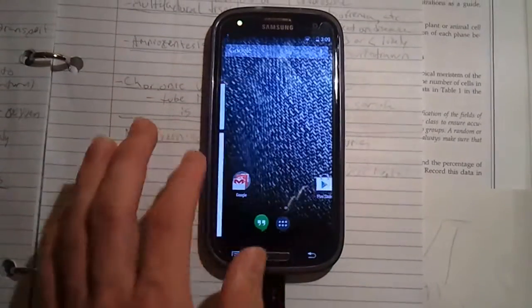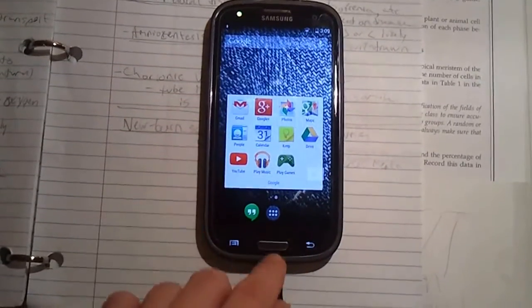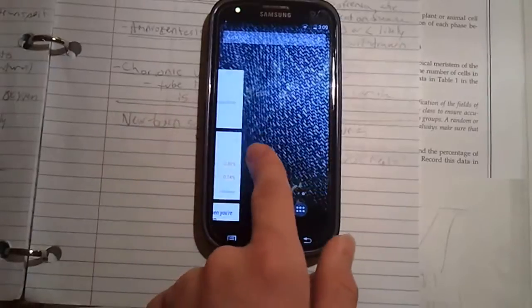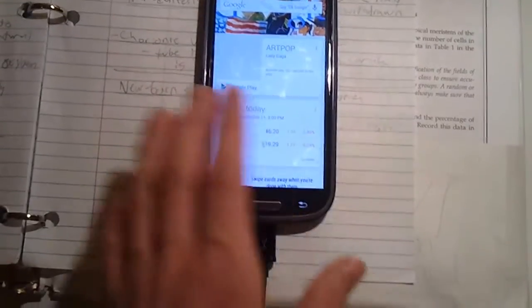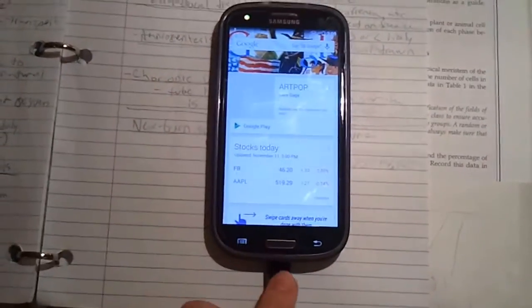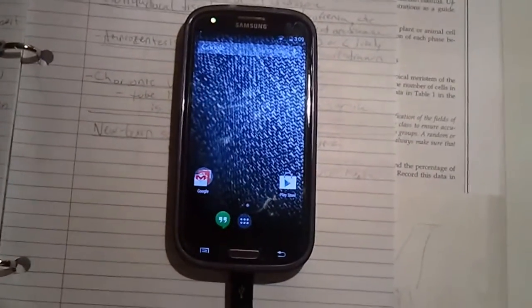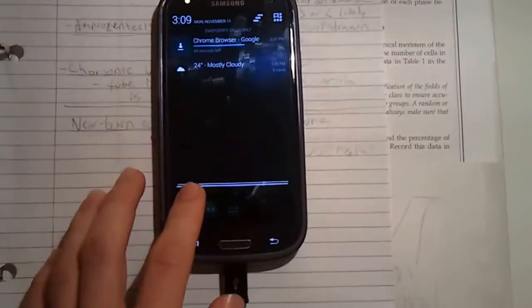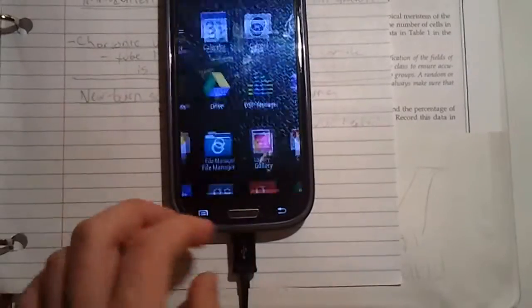But if you turn to the side, now you have this. So you've got the pages, and then when you turn to the right, you've got this. And right here is all your Google Now stuff, which is very cool. I like it. So yeah, basically this is 4.4 on the Galaxy S3.